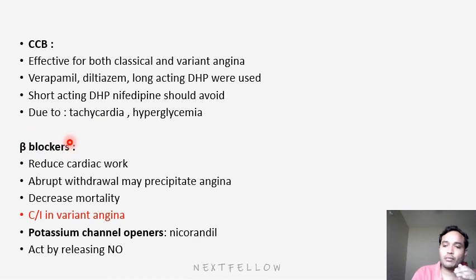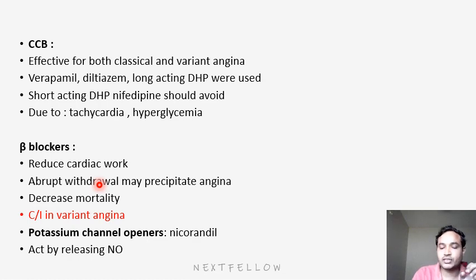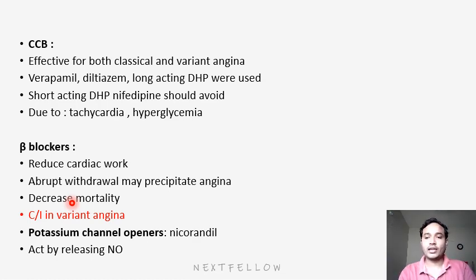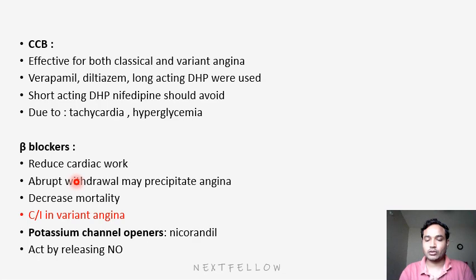Next is beta blockers. Beta blockers reduce heart rate and cardiac work. Abrupt withdrawal may precipitate angina, so the dose should be tapered down — we should not stop immediately. These drugs are beneficial in decreasing mortality. Among these drugs, beta blockers will decrease mortality because they decrease heart rate, thereby decreasing heart activity and oxygen consumption, giving the patient relief. The main contraindication is variant angina — because variant angina is due to vasospasm, and beta 2 normally has vasodilation and bronchodilation properties. When blocked, beta blockers may aggravate variant angina.